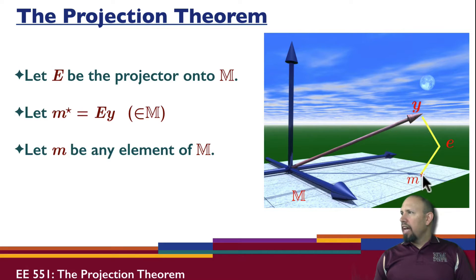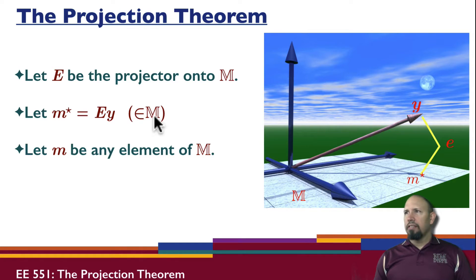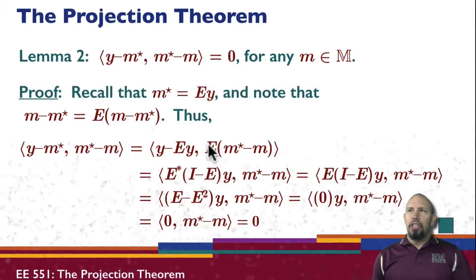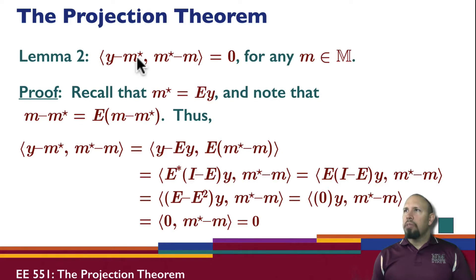The error that we're looking at is the difference between Y and M star, where M star is in the plane. M star is the projection, and it is on the plane. Then we're going to let M be any other element — any element — of the subspace. So here's the projection theorem. We're going to use this lemma, which says that the inner product of Y minus M star with M star minus M is zero for any M in the subspace.